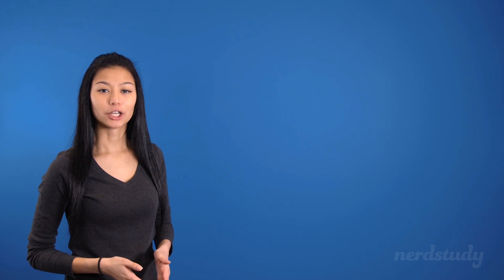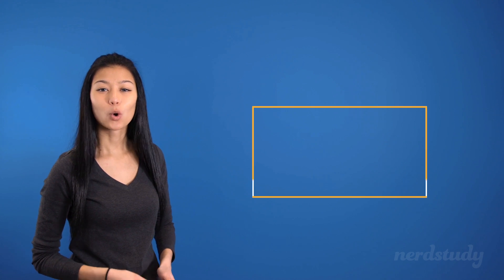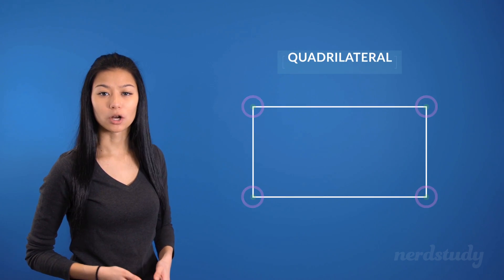We've already learned about what a polygon is. But a polygon with specifically four sides, or shall I say, four vertices, is called a quadrilateral.